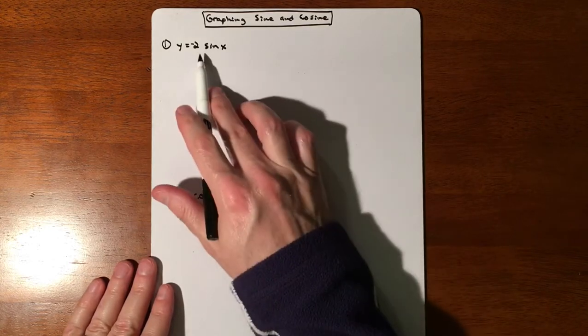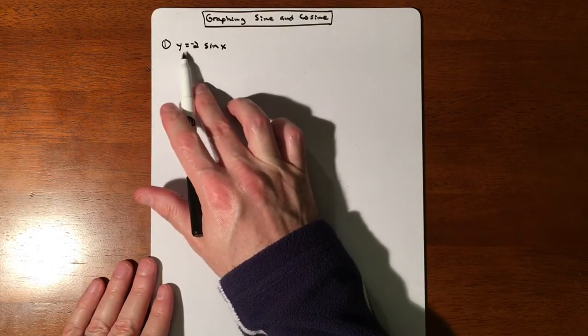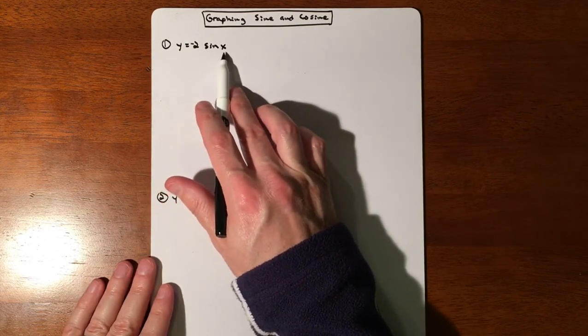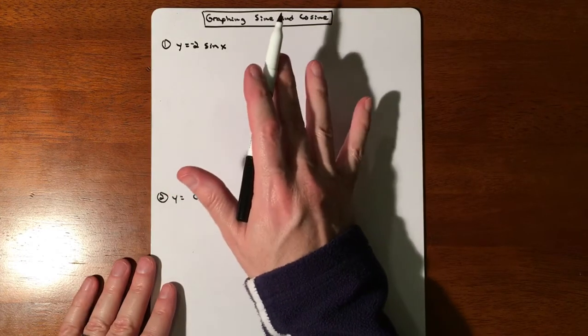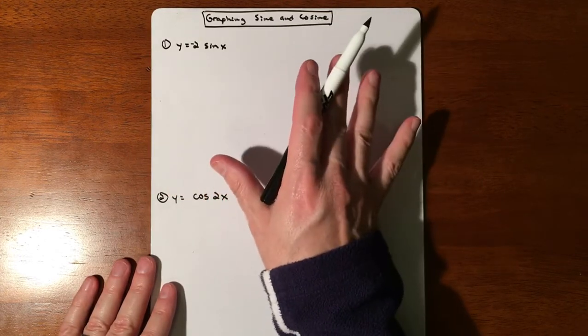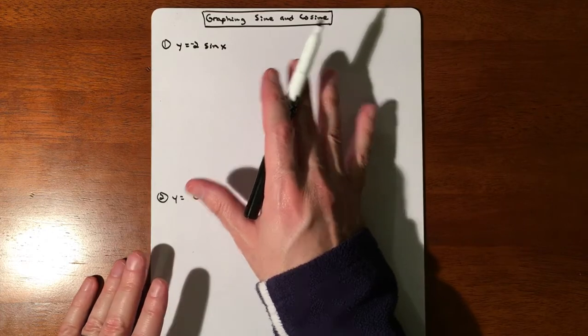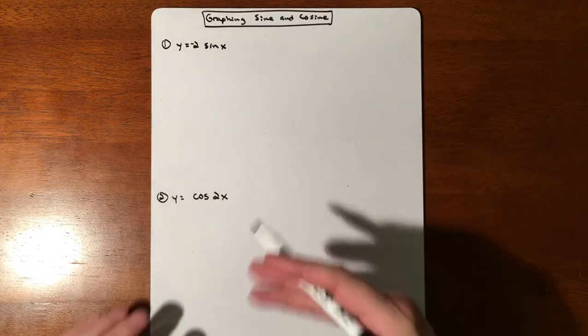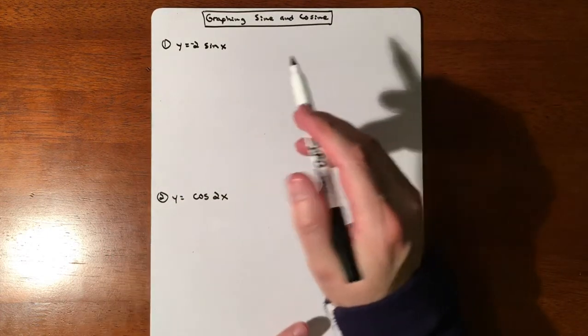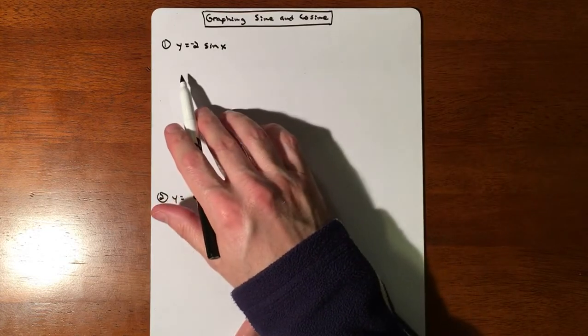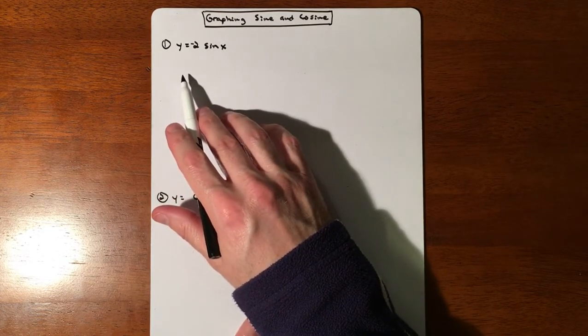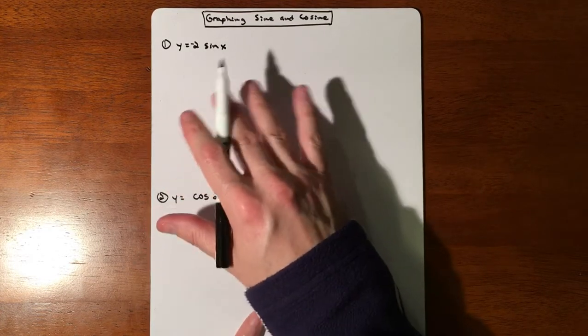This is the equation that we have: y equals negative 2 sine x. The biggest thing is knowing that sine starts on the line, and then what is our period and amplitude. We're not gonna have any vertical shifts or horizontal shifts, no midline adjustments, and no phase shifts.